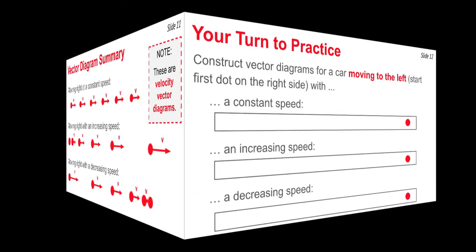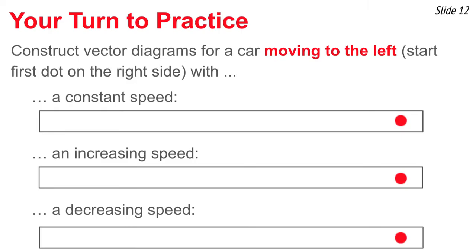Now it's your turn to practice. We're going to have you construct the vector diagram for a car moving to the left with a constant speed, an increasing speed, and a decreasing speed. Pause the video here and think about how you would do that. Maybe even draw it out on scratch paper — the dot starts on the right side and continues towards the left. Draw the dots, then draw the arrows. When you're done, play the video.